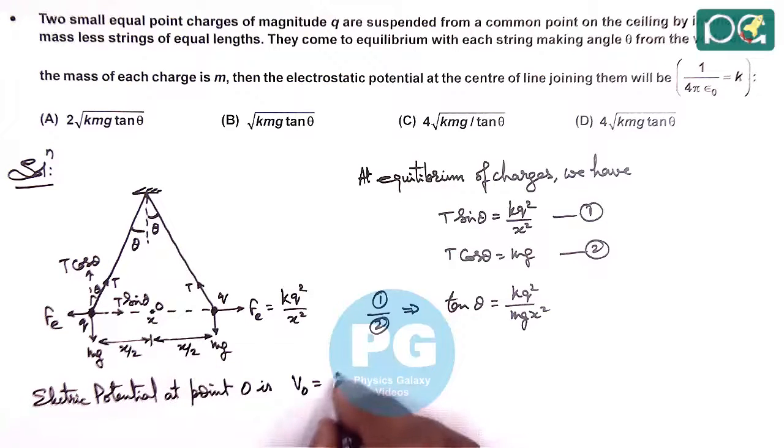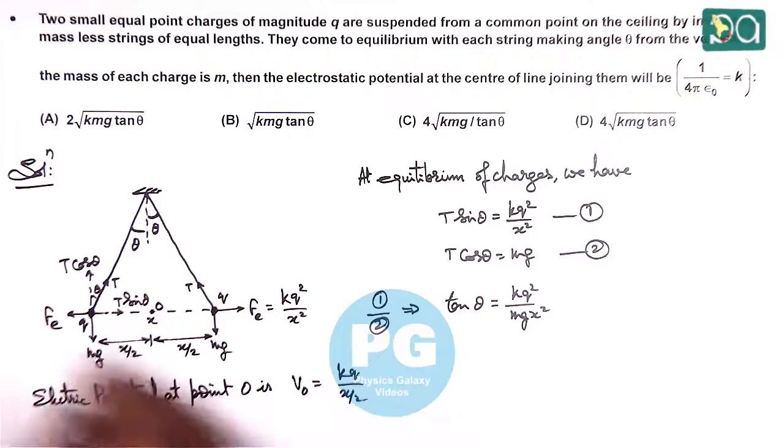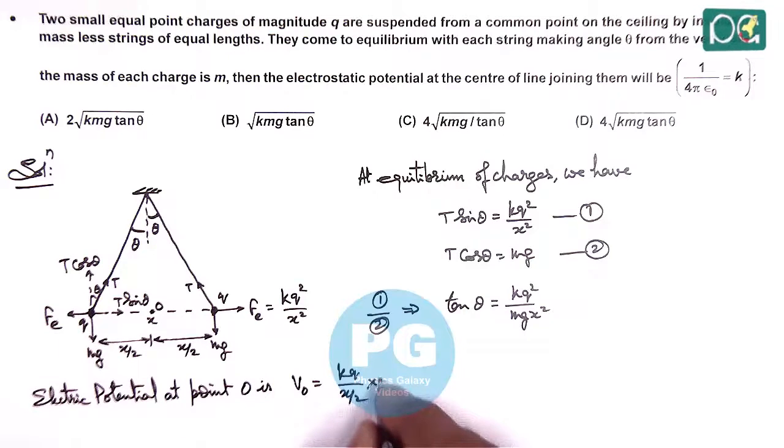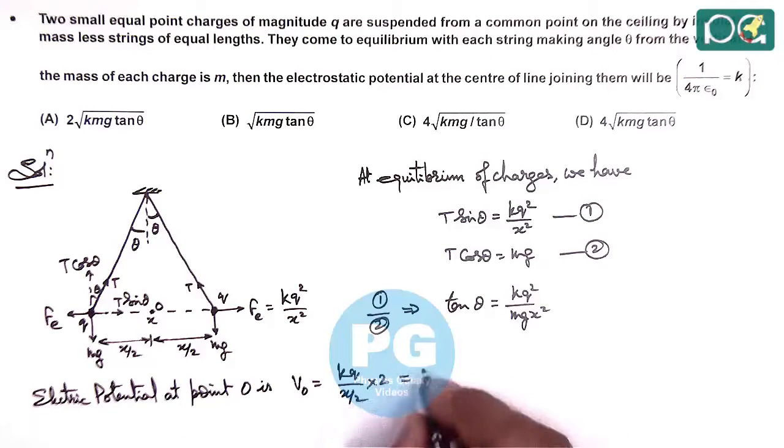We can write it as Kq upon x/2 due to one charge, and there are two, so this is multiplied by two, which gives 4Kq by 2, which equals 4Kq upon x.